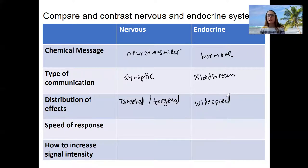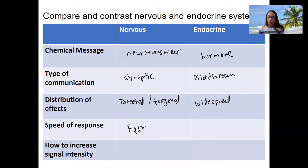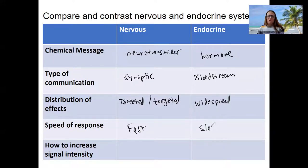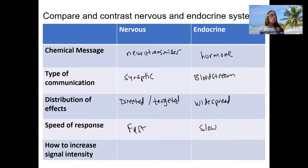How widespread depends on the hormone and where there are receptors for it. Speed: the nervous system is fast — action potentials are like electricity. Hormones traveling through the bloodstream takes longer, so effects are slower. That's the main reason, among some others.